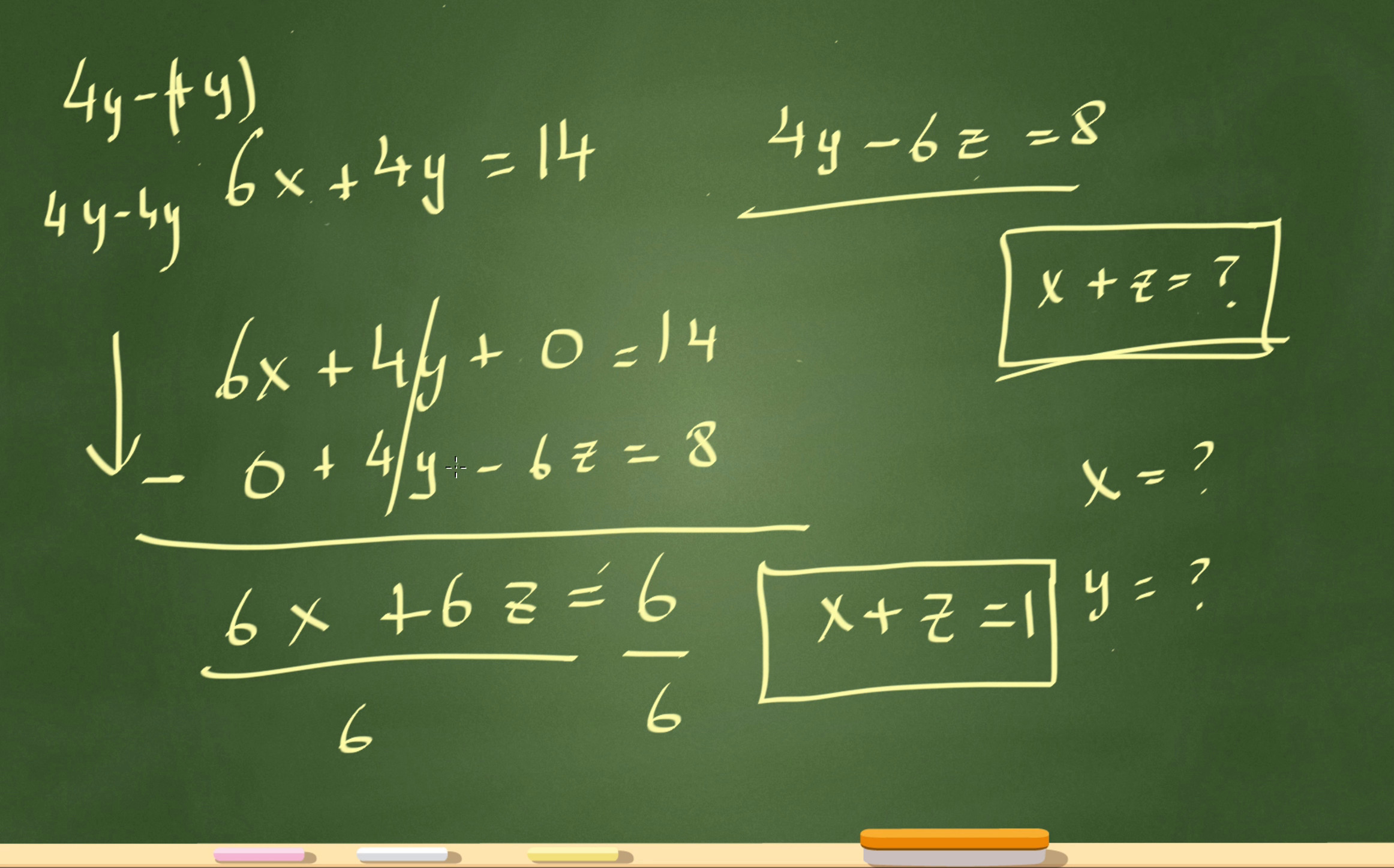And zero minus negative 6z becomes a zero plus 6z. That's what I had there. And then 14 minus 8 is 6. And then I was able to divide everything by 6 and get x plus z.